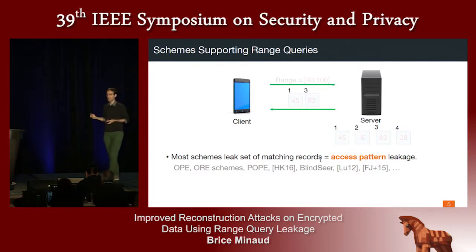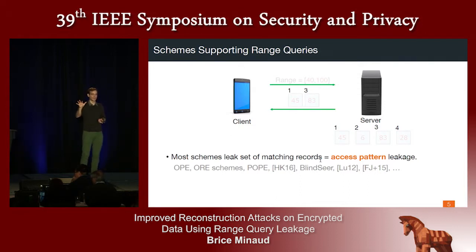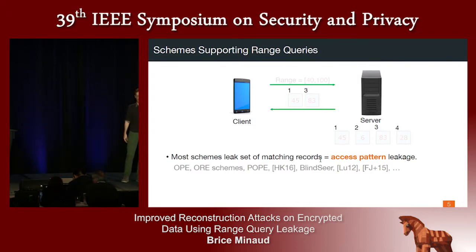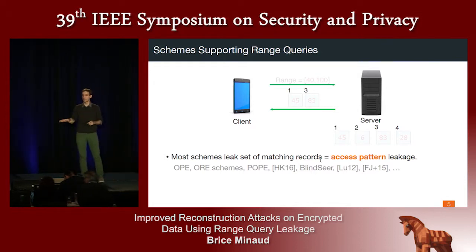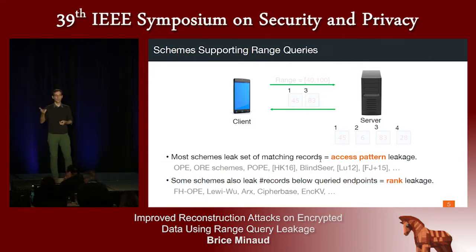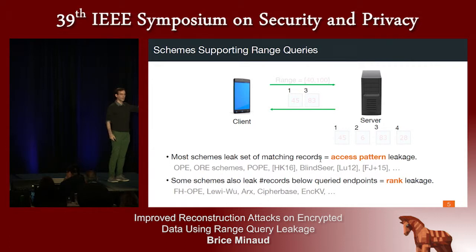The reason it's called that is because while I've represented the identity of each record by a number from one to four, in practice the identification of a record is its memory address. In order to return records one and three, the server has to access the memory locations storing those records — unless you use something like oblivious RAM. So in many settings, unless you use an advanced technique to hide access patterns, this leakage is inherent. Most schemes — the vast majority — will leak that information. In addition, many schemes will also leak rank leakage: how many records are below and how many are above the queried range.